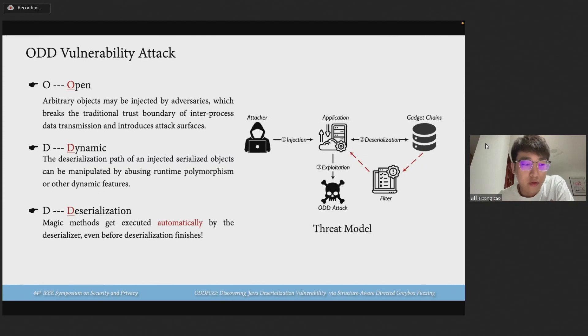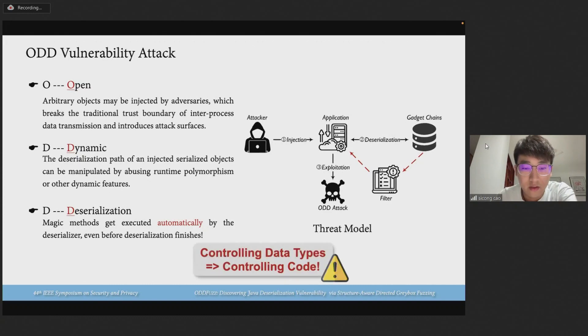As shown in our model, once the attacker controls the property type of serialized data, security-sensitive code can be easily hijacked by invoking exploitable gadget chains. Controlling data types can result in controlling code.